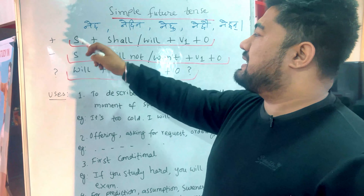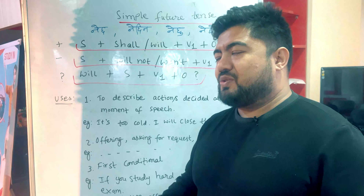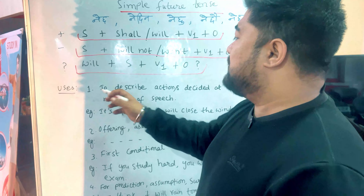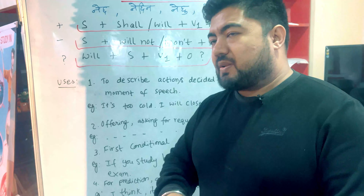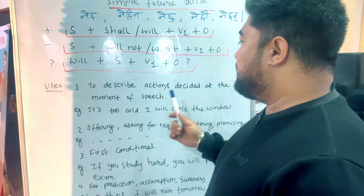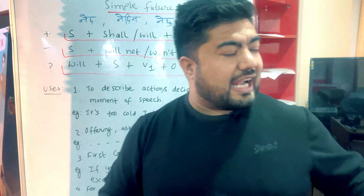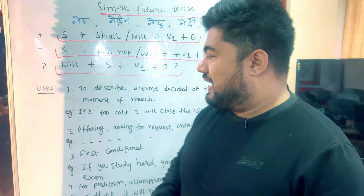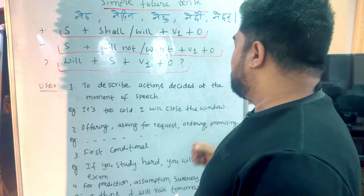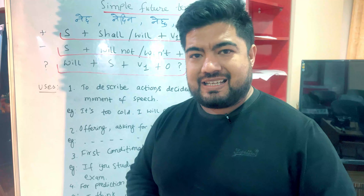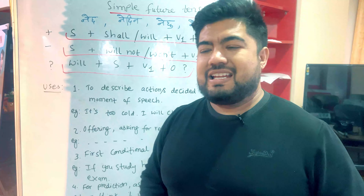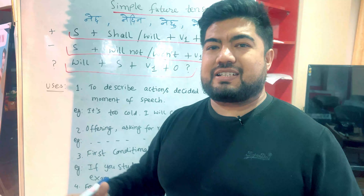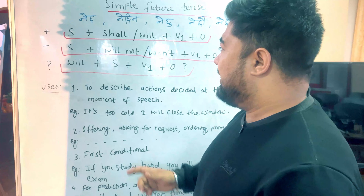So we have positive, negative, and interrogative sentences in simple future tense. The first use is to describe actions decided at the moment of speech. For example: if it is too cold, I will close the window.